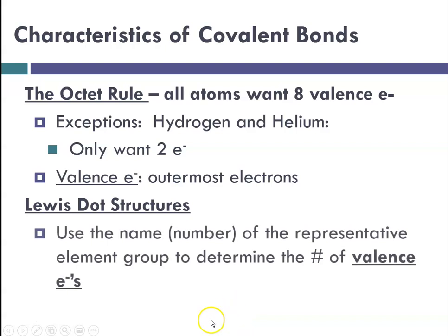So we use the name and number of representative element group to determine the number of valence electrons. So again if we're counting across the S block and the P block we could count from 1 to 8 and remember 8 is great. So as far as valence electrons are concerned we're talking about the S and P sublevel.